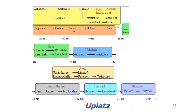Sandy Bridge and Ivy Bridge moved from 32nm to 22nm. The Atom family — Silverthorne, Lincroft, Diamond, Whaley, Pine View, and Cedar View — are associated with the 32nm process node.